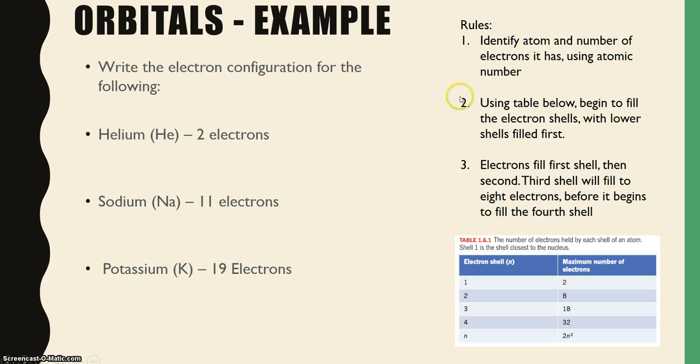What I want you to do now is read these rules. These are the rules of how we fill and use an electron configuration using the Bohr model of the atom. I want you to use this table to answer these questions. Pause the video, read through these rules, answer these questions to write the electron configuration for these atoms.